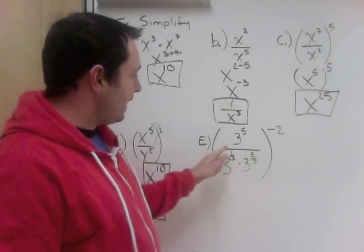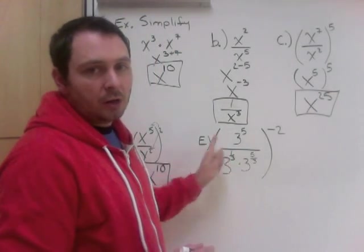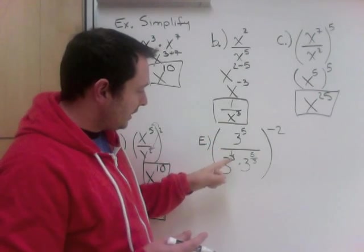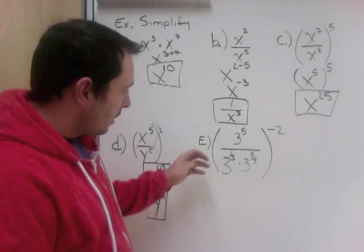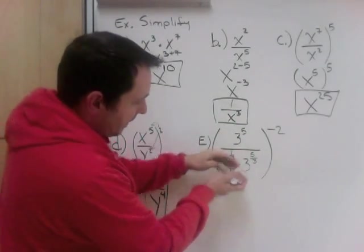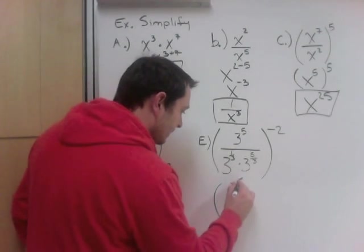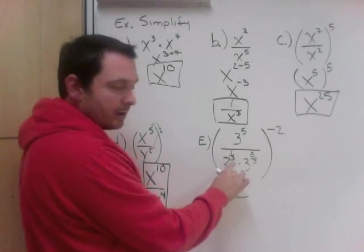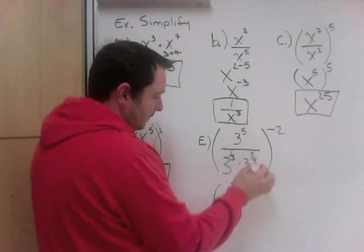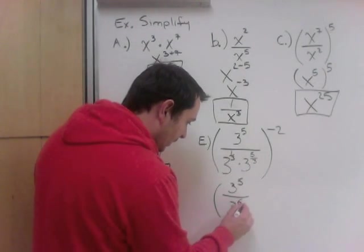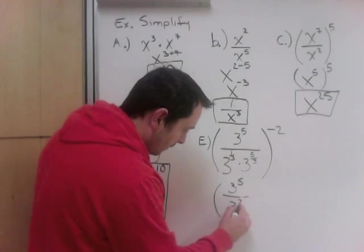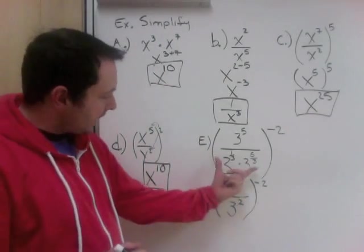Last one in this section — a bigger example: 3 to the power of 5 divided by (3 to the third times 3 to the 5 thirds), all to the power of negative 2. BEDMAS — work inside the bracket first. Are they all the same base? Yes, all 3s. Working on the bottom half of the bracket: it's multiplying, so add the exponents: 1 third plus 5 thirds. They already have a common denominator — 1 plus 5 is 6, over 3. So 6 over 3 simplifies to 2, giving 3 squared. Now inside the bracket we have 3 to the 5th divided by 3 squared. Quotient law — subtract: 5 minus 2 is 3, giving 3 cubed.